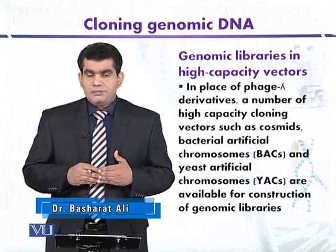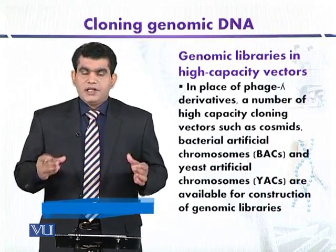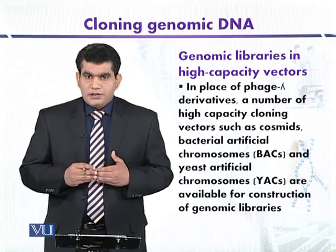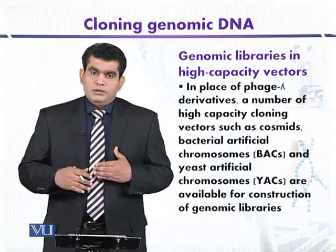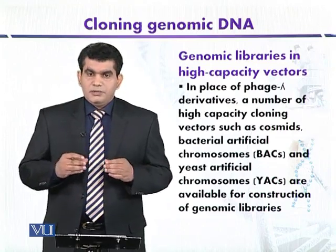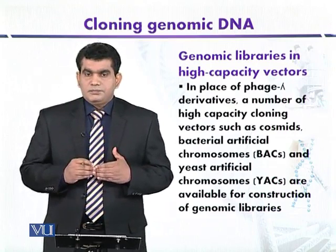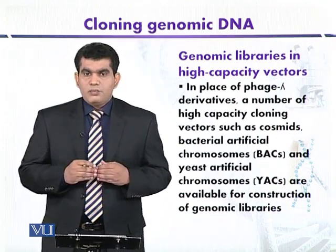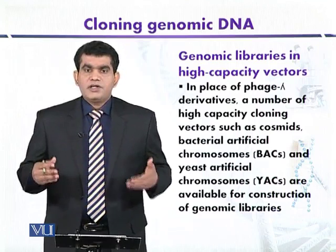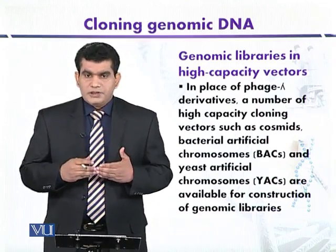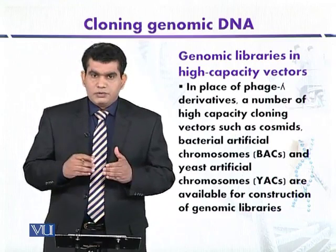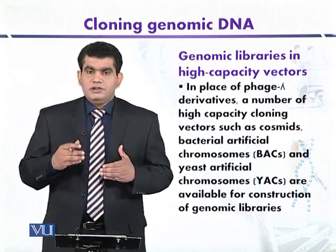Compared to bacteriophage lambda, the big DNA fragments can be cloned. The advantage of using high capacity vectors is that the size of the genomic library produced will contain a comparatively low number of recombinant clones, which is easy to screen. A genomic library represents the whole genomic DNA of a particular organism in the form of recombinant clones, and also contains our gene of interest.